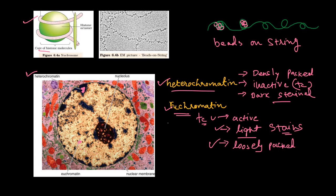These two parts make up the nucleus — heterochromatin and euchromatin. You can see in this figure the euchromatin with light stains and the heterochromatin with dark stains. Inside the nucleus there is also the nucleolus. That is all about the packaging of DNA with the protein inside the nucleus.